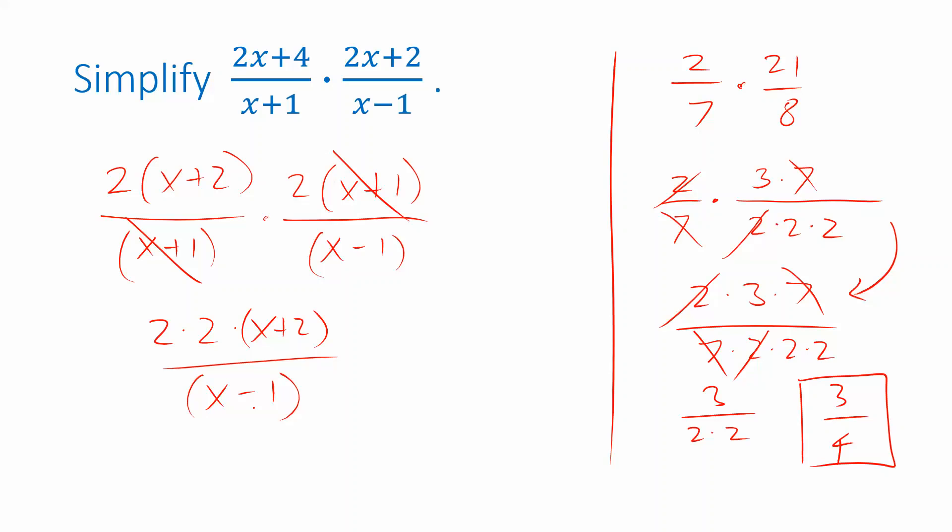And depending on what you're planning to do with it, you could leave it in that form, or you could try to reduce the number of parentheses you have to write. 2 times 2 is 4. And if I distribute that 4 into the x plus 2 in the numerator, I get 4x plus 8. And in the denominator, I can just write x minus 1.